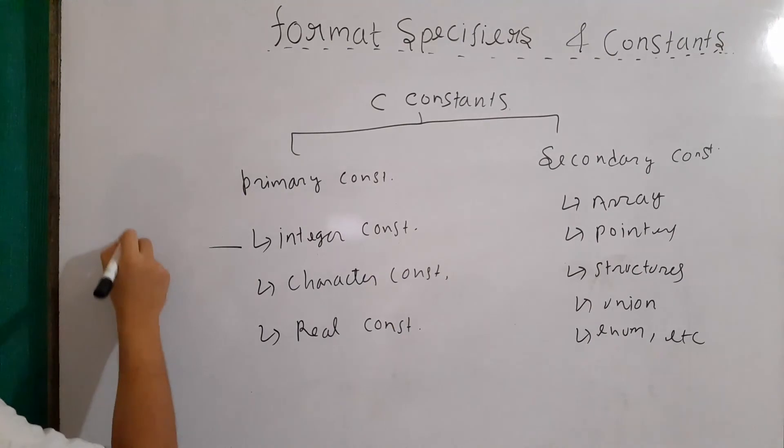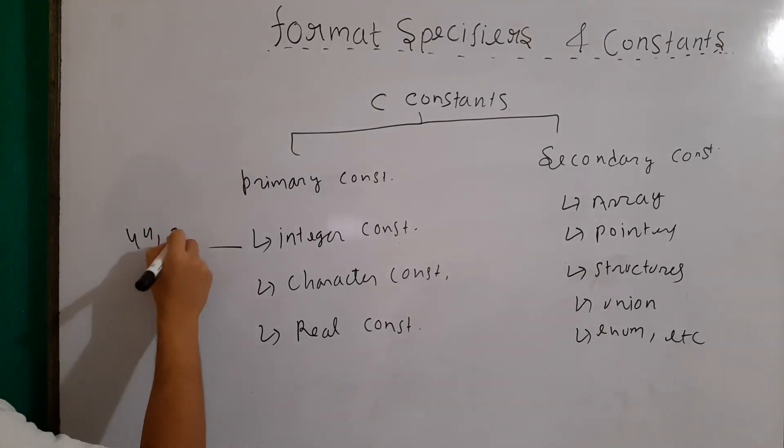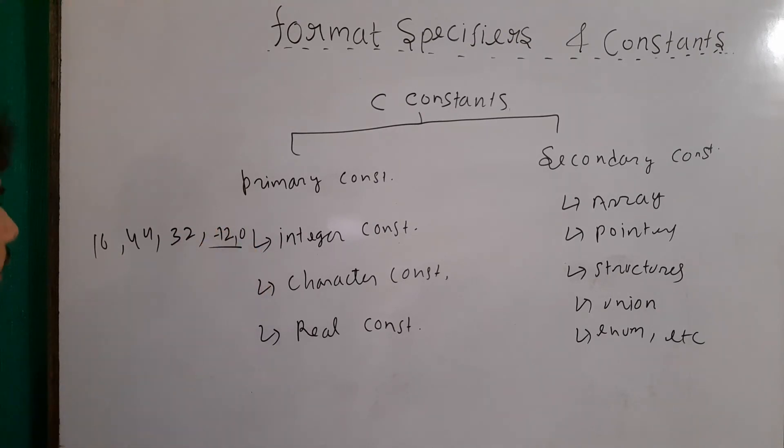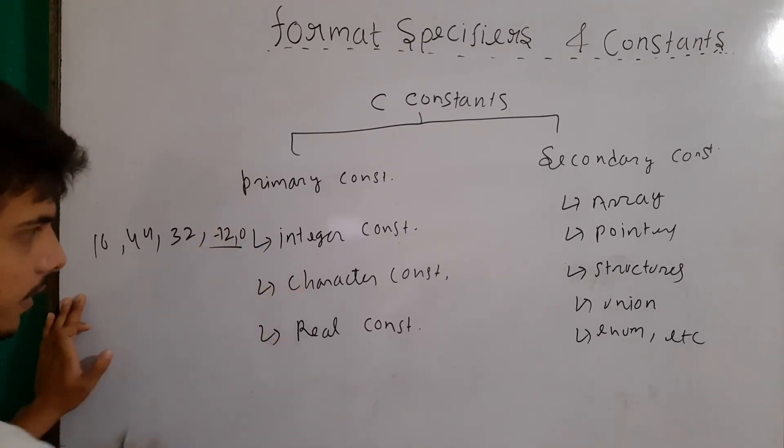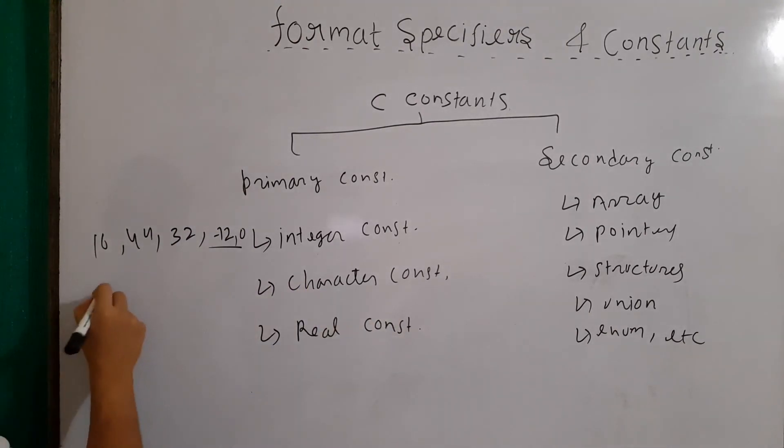So integer constant would be like 44, 32, then 16, minus 12, zero. So these are the integer constants. In character constants, there could be a, b, basically those which are inside a single quote, then one inside a single quote, remember that.